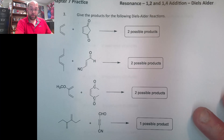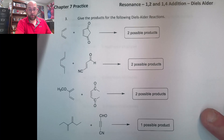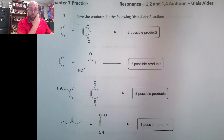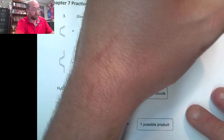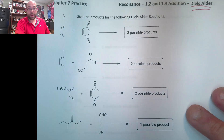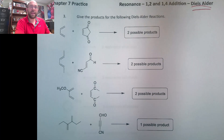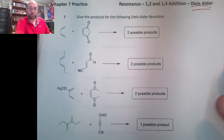Hello everybody. This will be our third video for the chapter 7 practice, and in this one we'll be looking at the Diels-Alder reaction. I've got about 8 practice problems here.